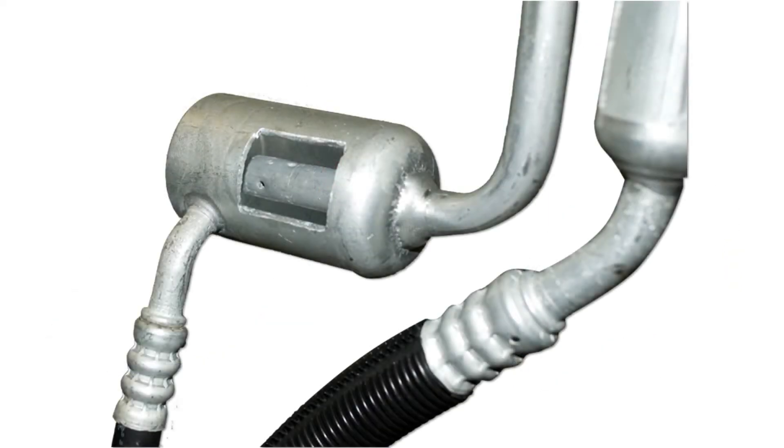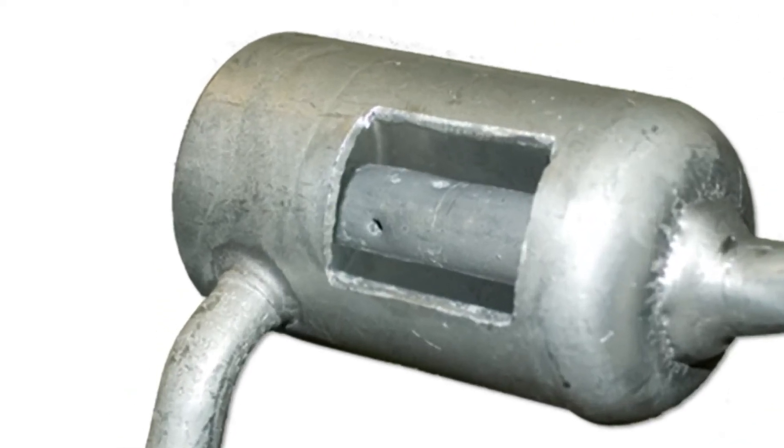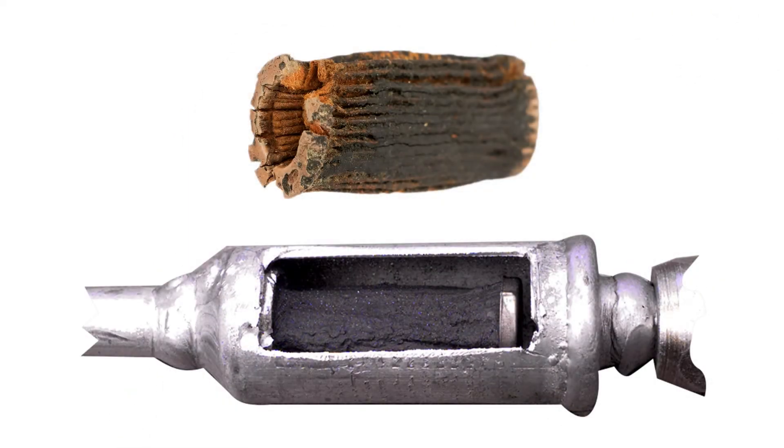As you can see in this cutaway, this muffler has internal baffles with only a pinhole for the refrigerant to pass through, while this muffler contains a filter which became clogged when the compressor failed.